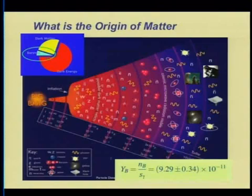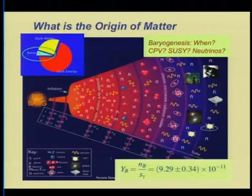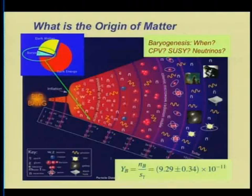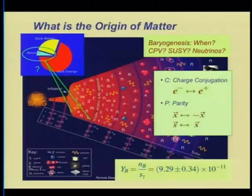How did this non-zero number arise? This getting-something-from-nothing is called baryogenesis, and we have open questions about it. When did it occur? Probably the latest time would have been around the era of electroweak symmetry breaking; it could have been much earlier. There had to be a violation of the symmetry called CP — that's CPV. CP is a combination of charge conjugation symmetry, where particles are turned into antiparticles, and parity symmetry.